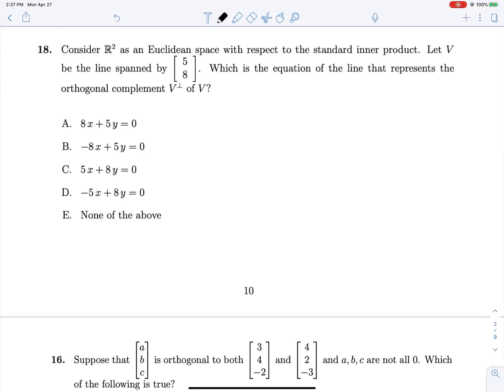So 1, 3, negative 2 is the vector that is always orthogonal to that plane. That's literally our answer. There's nothing else to that one. Problem 18: Consider R2 as a Euclidean space with respect to the standard inner product. Let V be the line spanned by 5, 8. Which is the equation of the line that represents the orthogonal complement of V? Let's graph this out, we can do this graphically pretty easily.